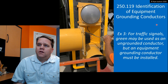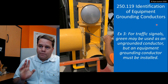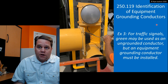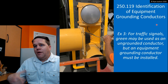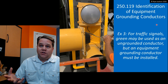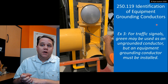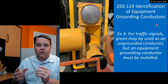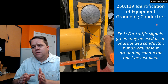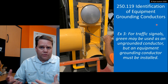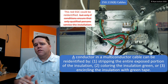For traffic signals, green can be used as an ungrounded conductor, but an equipment grounding conductor must still be installed as well. The standard operating procedure for traffic signals is to use a red wire for the red light, a yellow wire for the yellow light, and a green wire for the green light — not green as the equipment grounding conductor. This exception was added to recognize that this has been the practice for a very long time with a good track record.